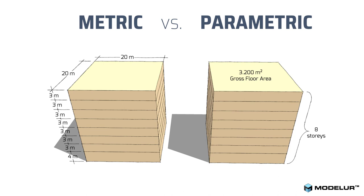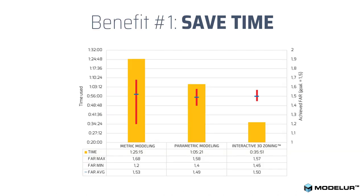One might ask: what is the benefit of using the parametric approach compared to the traditional way? In Modeler, we have also done research on this. There are clear benefits to using parametric design over traditional modeling with standard units. One clear benefit is saving a lot of time, which you can then funnel back into creating more design options and iterations, and responding faster to client feedback.